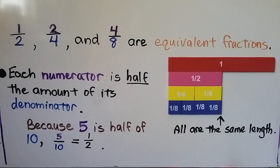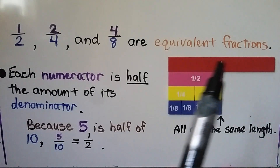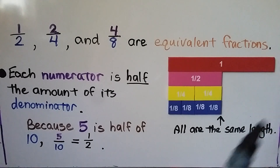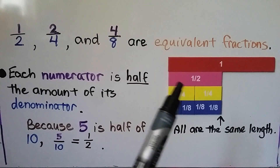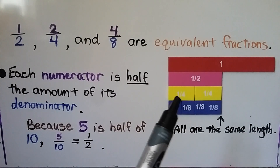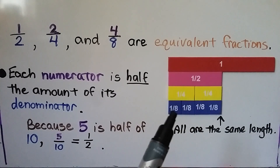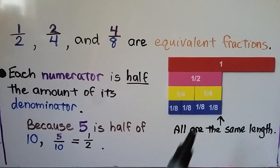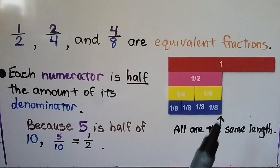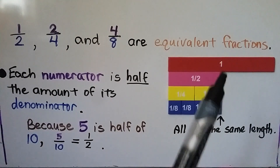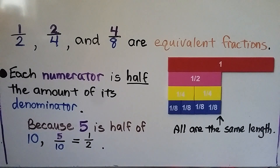Using our fraction strips, here we have one whole. We can see one half, two-fourths, and four-eighths — they are all the same length. They are equivalent fractions.